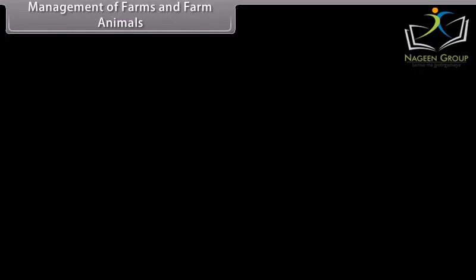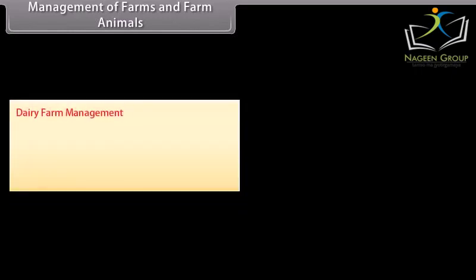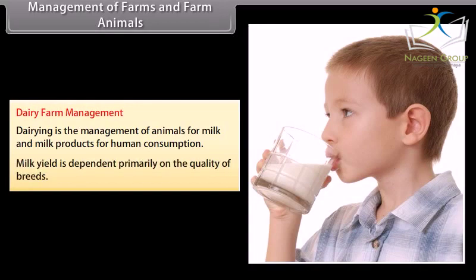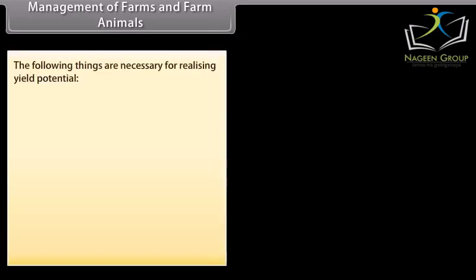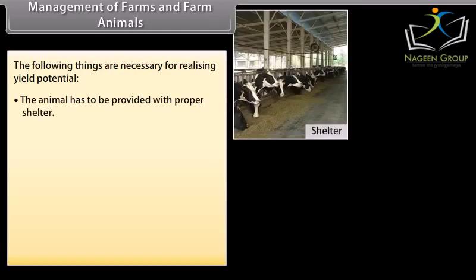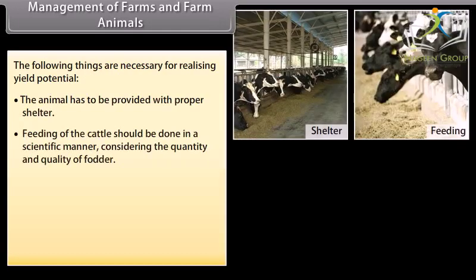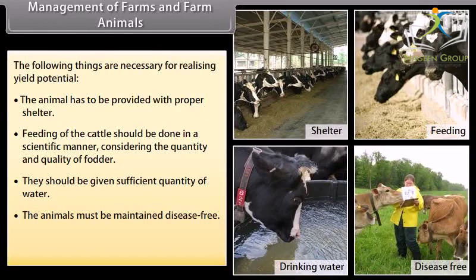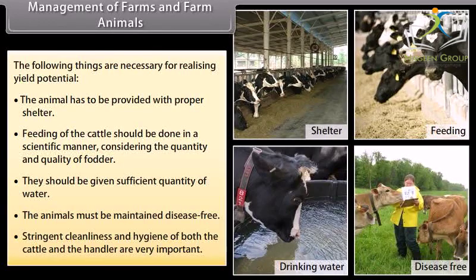Dairying is the management of animals for milk and milk products for human consumption. Milk yield is dependent primarily on the quality of breed. The animal has to be provided with proper shelter. Feeding of the cattle should be done in a scientific manner, considering the quantity and quality of fodder. They should be given sufficient quantity of water. The animals must be maintained disease-free, and stringent cleanliness and hygiene of both the cattle and the handler are very important.